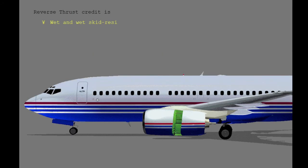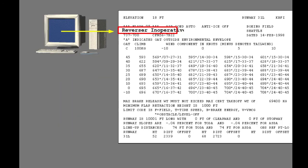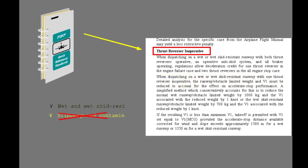The wet runway and wet skid resistant runway takeoff data takes credit for reverse thrust on one engine, as does the slippery and contaminated runway data. If dispatching with one thrust reverser inoperative or deactivated, the airplane stopping capability will be reduced on slippery, contaminated, or wet runways. The operational computer program is capable of computing takeoff performance with a reverser inoperative for all runway conditions previously discussed. The QRH provides weight adjustments for the case where a thrust reverser is inoperative on a wet or wet skid resistant runway, but does not provide weight adjustments for a slippery or contaminated runway.